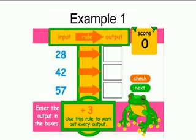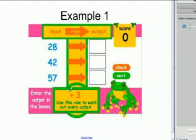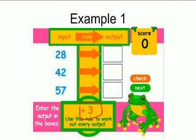So this is a very simple input-output table. If we're looking here, it just says that if you input 28, 42, and 57, what are you going to get out? Well, in this case, it tells us our rule. And it tells me that my rule is 3.